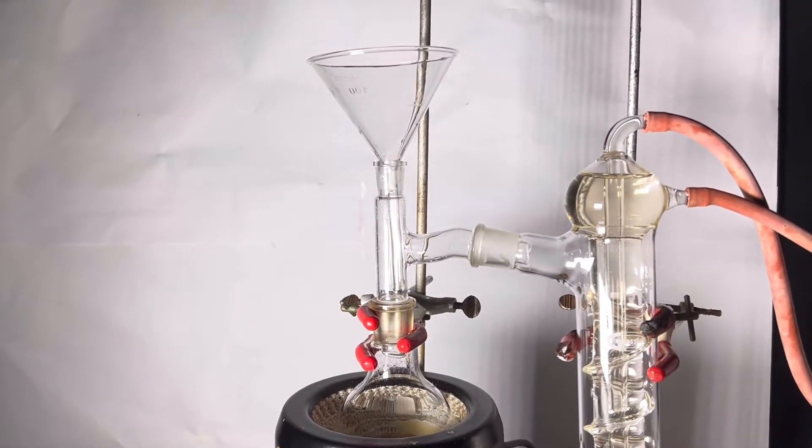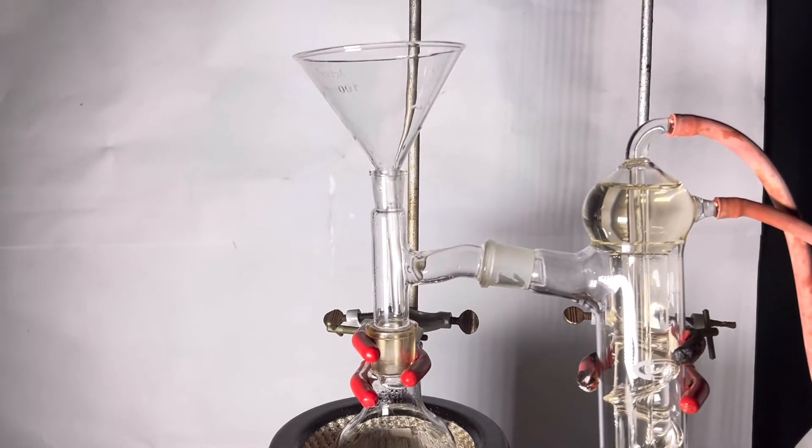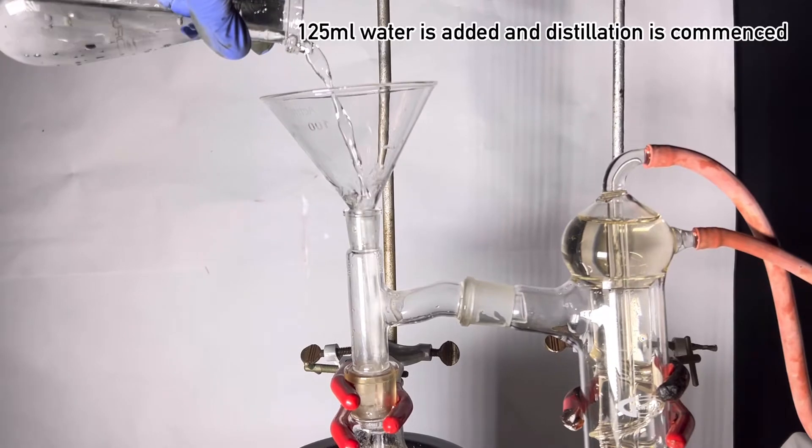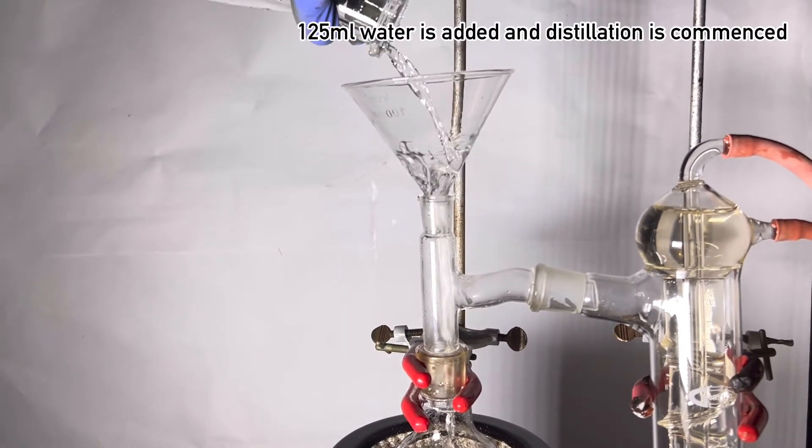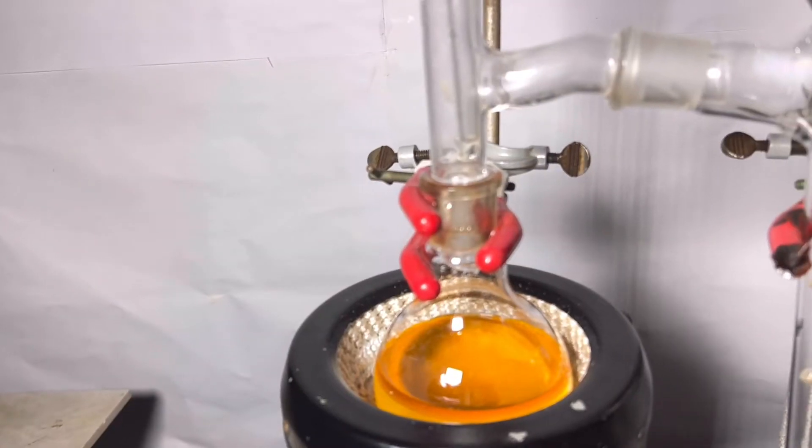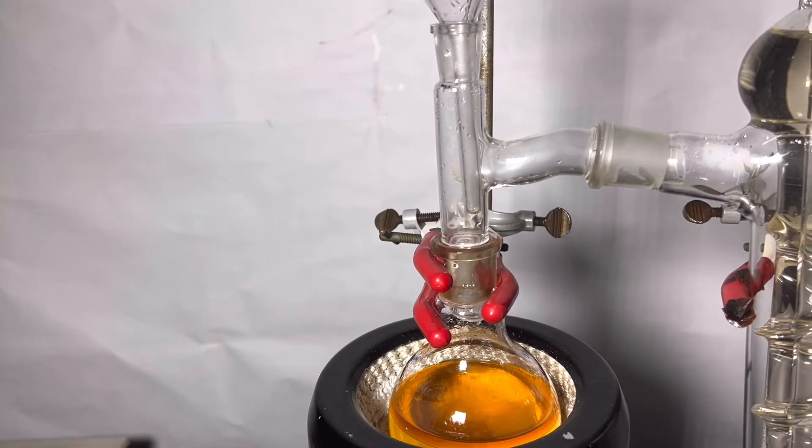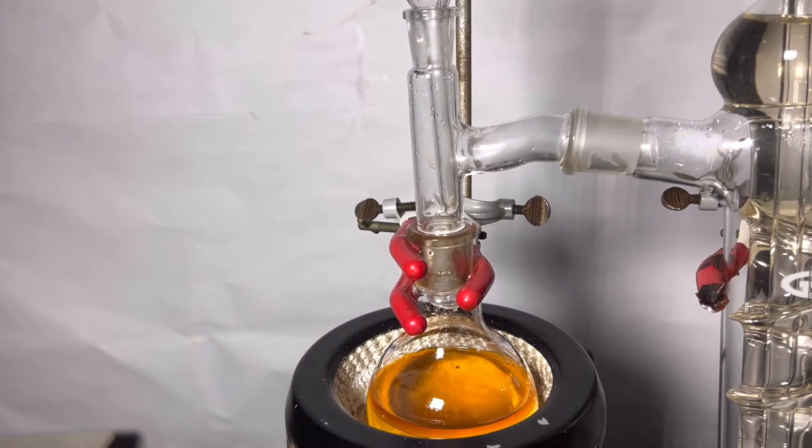Then the flask was set for distillation in a heating mantle. Around 125 ml of distilled water was added. We can clearly notice a dark red upper layer and that is the crude valeronitrile.